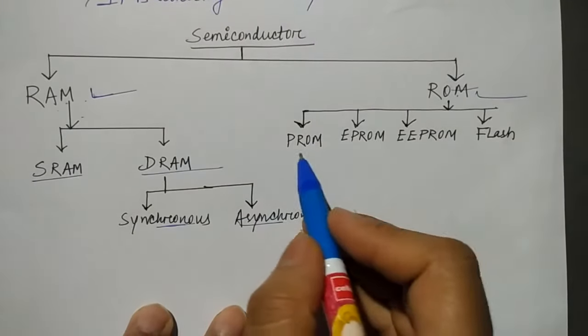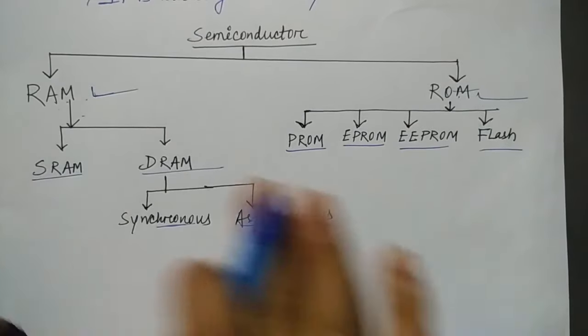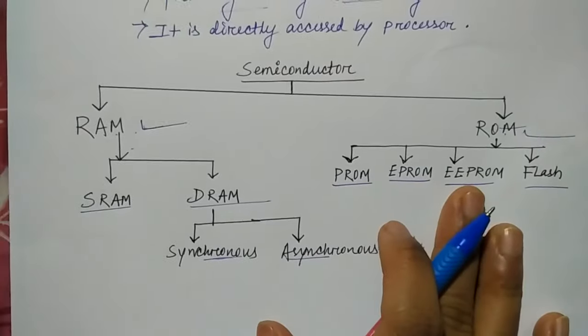ROM is of four types: PROM, EPROM, EEPROM, and Flash. So this is the detail. We will see in the next videos.